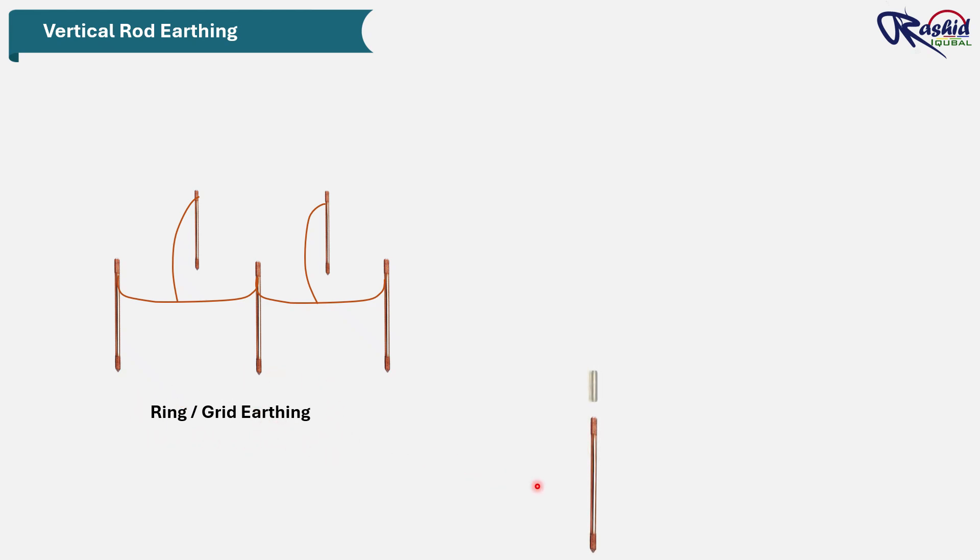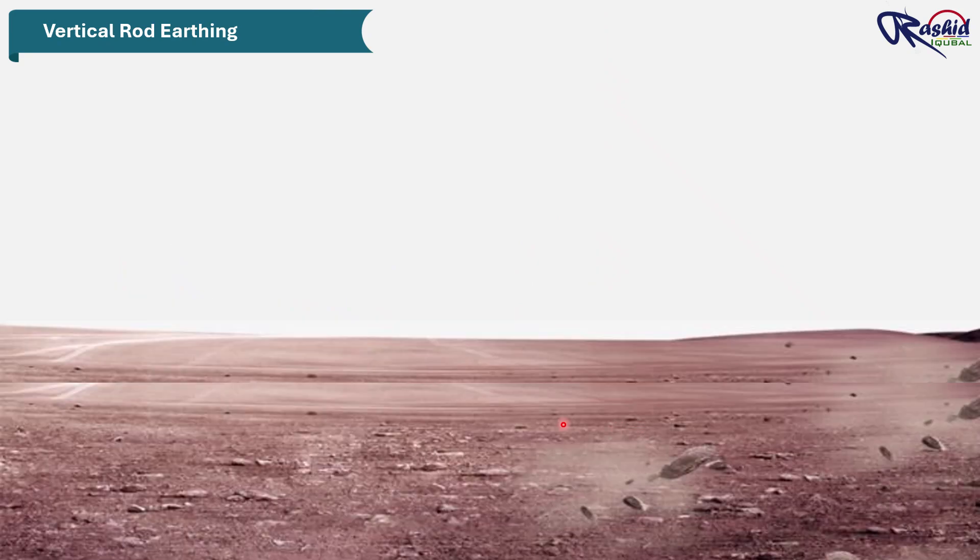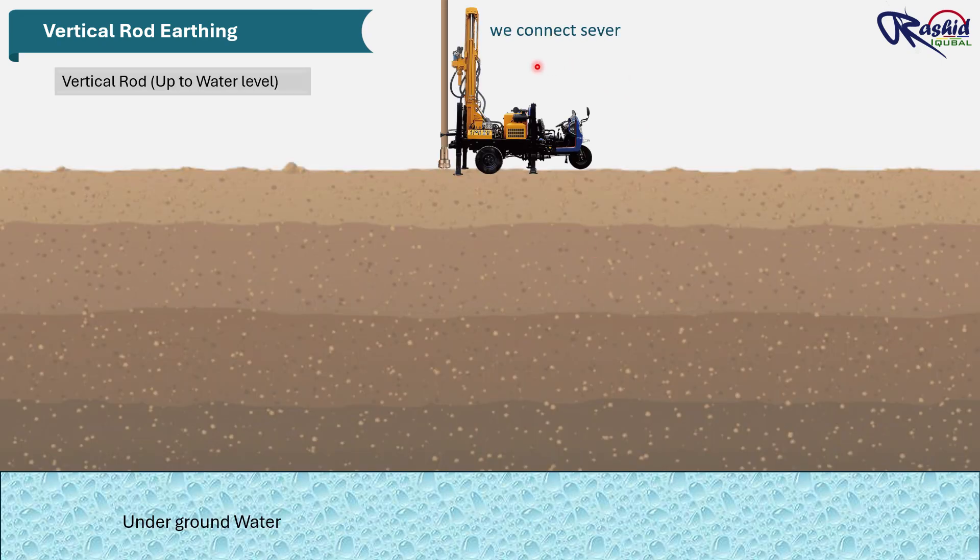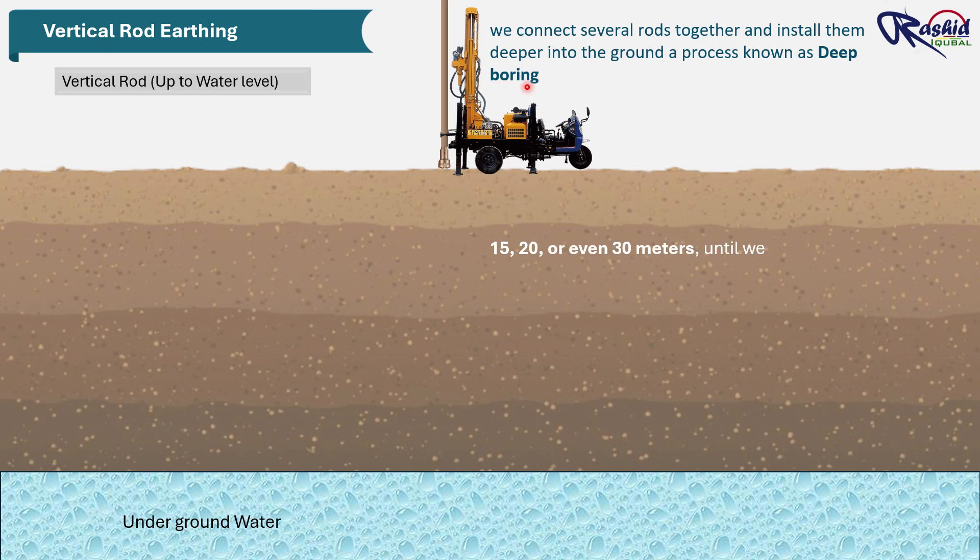Install multiple rods in parallel forming a ring or grid earthing system, which I already explained earlier. And the second method: drive longer rods deeper into the moist or more conductive soil layers such as clay or near the water level. In desert or hilly regions, especially in some Middle Eastern countries, the soil is extremely dry and the water table is very deep. Because of this, a normal 3 meter earth rod cannot achieve low resistance. So we connect several rods together and install them deeper into the ground, a process known as deep boring. In such cases, we use deep boring where the rod is installed much deeper, sometimes 12, 20, or even 30 meter or 40 meter, until we reach moist soil or water level.